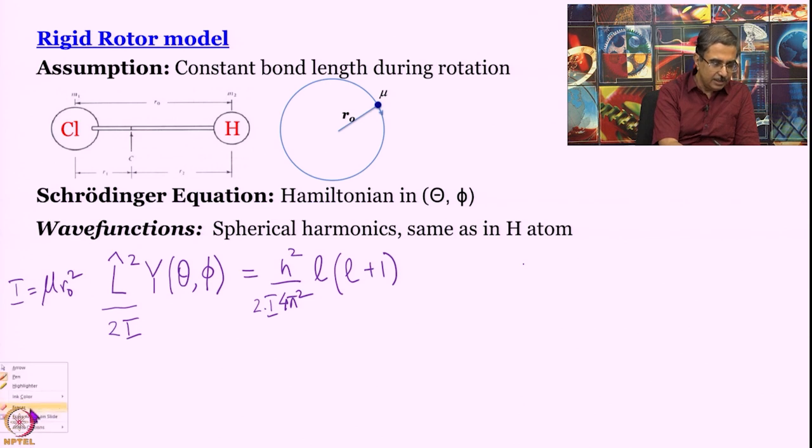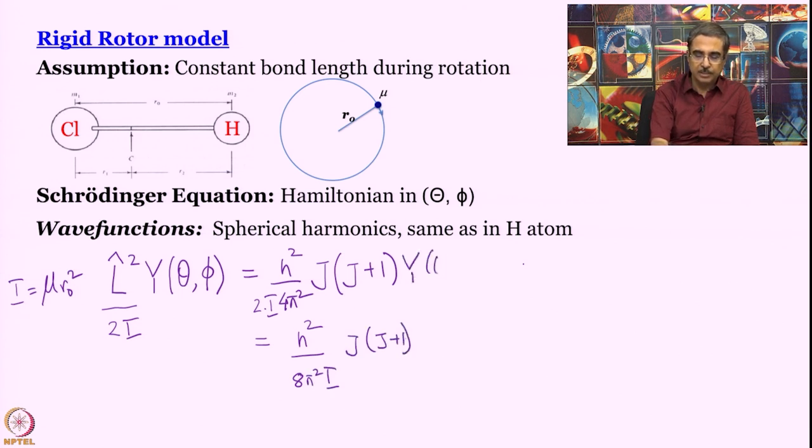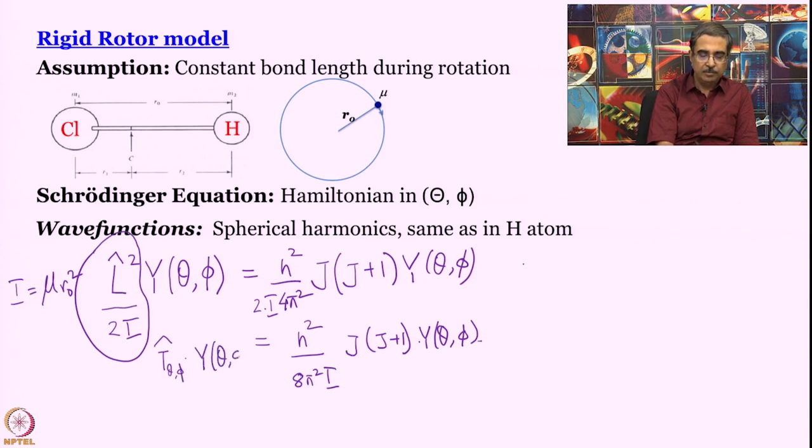We will make only one change here - we will not write l. When you talk about rigid rotor, it is conventional to write j as the quantum number instead of l. What is j? j is the rotational quantum number, very similar, or for all practical purposes same as the azimuthal quantum number in hydrogen atom. So let us write it a little better. This turns out to be h square divided by 8 pi square I into j into j plus 1 - I forgot to write this Y theta phi here - multiplied by Y theta phi.